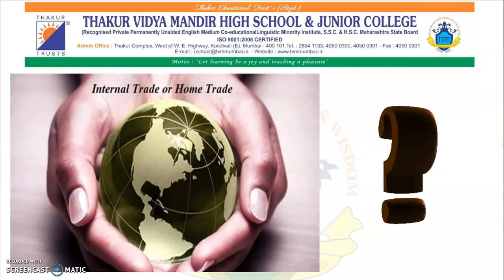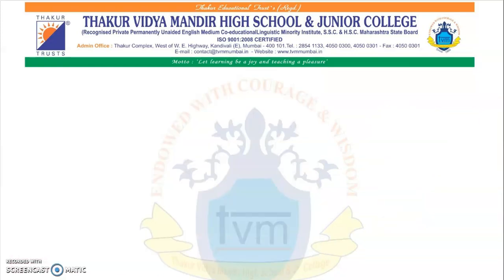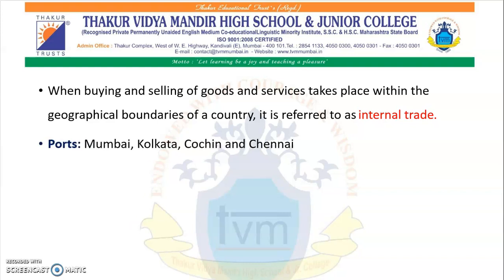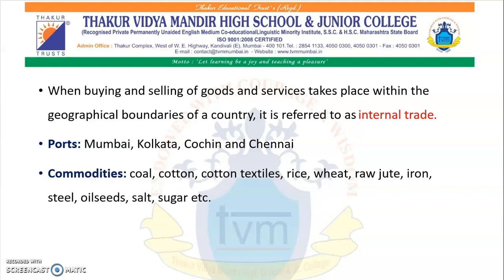Now let's think about what is internal trade or home trade. When buying and selling of goods and services take place within the geographical boundaries of a country — within India — it is referred to as internal trade. Internal trade takes place through railways, waterways, roadways and airways. Ports like Mumbai, Kolkata, Cochin and Chennai are important. Commodities like coal, cotton, cotton textile, rice, wheat, raw jute, iron, steel, oil, salt and sugar are included in internal trade.